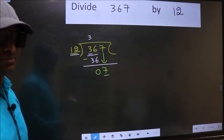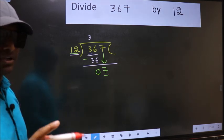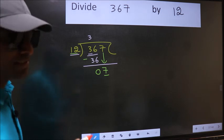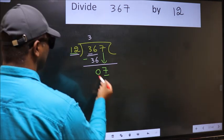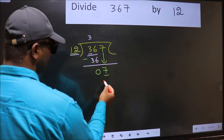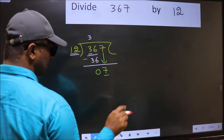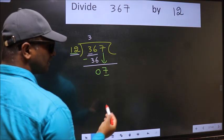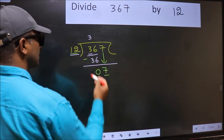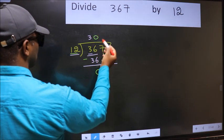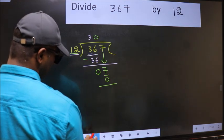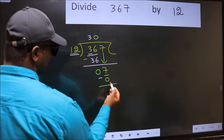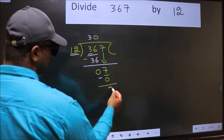Instead, what you should think of doing is, which number should we take here. If I take 1, we will get 12, but 12 is larger than 7. So what we should do is we should take 0. So 12 into 0, 0. Now you should subtract. 7 minus 0, 7.